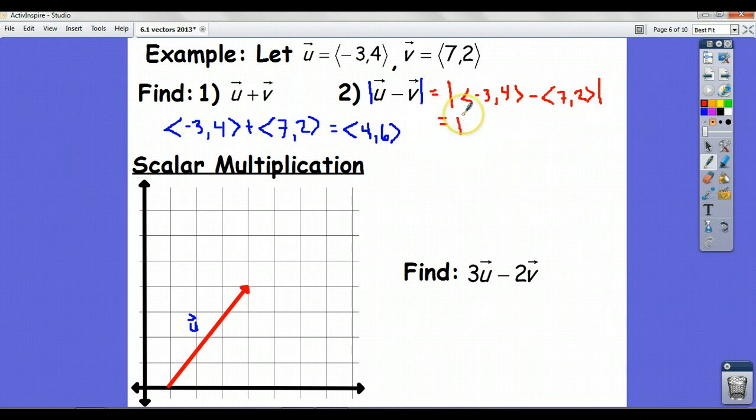And, so subtraction works just as well. You have options here. What you can do is just do negative 3 minus 7, or you can distribute the negative to the 7 and the 2, and then add. So, it's up to you. Just be careful. Negative 3 minus 7, I'll just leave it as is. Negative 3 minus 7 is negative 10. 4 minus 2 is 2.